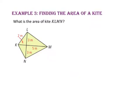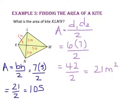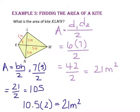In Example 3, we will find the area of a kite. What is the area of kite KLMN? Starting with the formula, diagonal 1 times diagonal 2 divided by 2. The length of the first diagonal is 3 plus 3, or 6 meters. The length of the second diagonal is 2 plus 5, or 7 meters. So 6 times 7 divided by 2 equals 21 square meters. Alternatively, the area of triangle KML with base 7 and height 3 is 10.5, and since triangle KNM has the same base and height, 10.5 times 2 equals 21 meters squared — the same result.